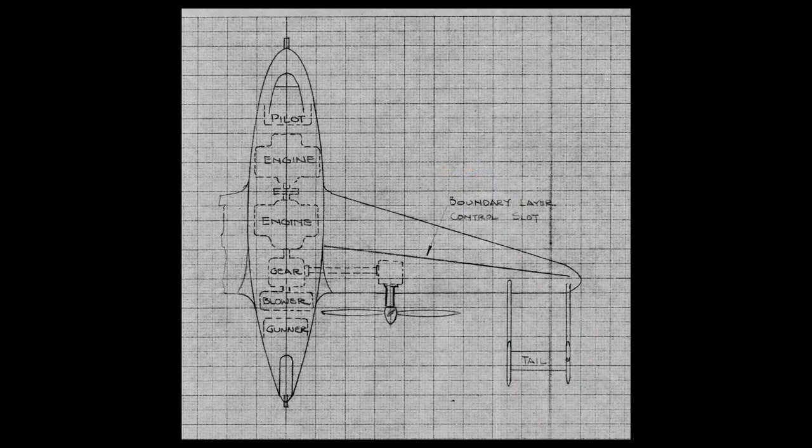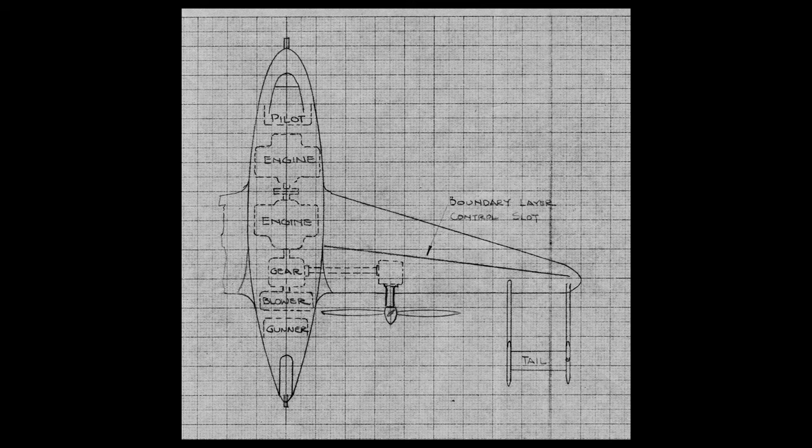The Silverstein fighter of 1938 was an advanced concept put forward by NACA engineer Abraham Silverstein, who would go on to have a long and distinguished career with the agency. This buried engine design featured unusual wing-mounted tail surfaces, boundary layer control, and other devices to improve performance.